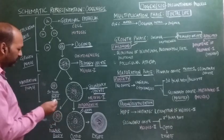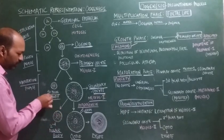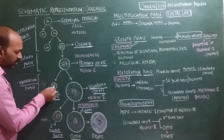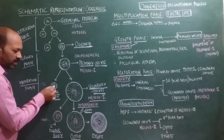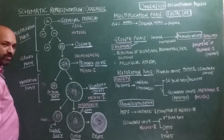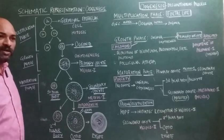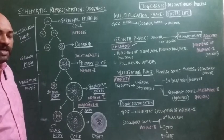The first polar body, which has a haploid set of chromosomes, may or may not divide further.